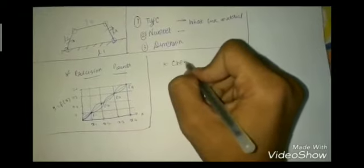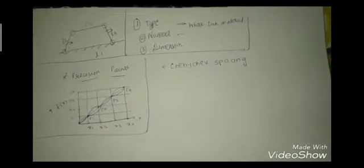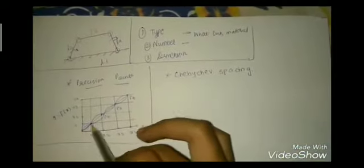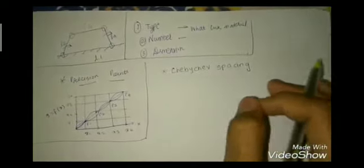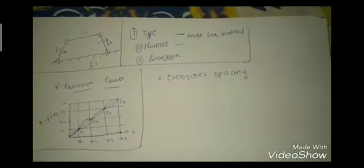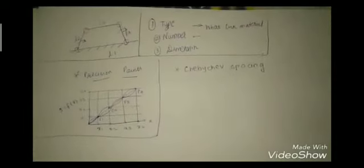Precision points are found using a theorem named Chebyshev spacing. It is basically a theorem used to find out the spacing between precision points at which the mechanism will meet. It has a simple formula — we won't get into the derivation as it is not included in the syllabus. It is used for best spacing of precision points.